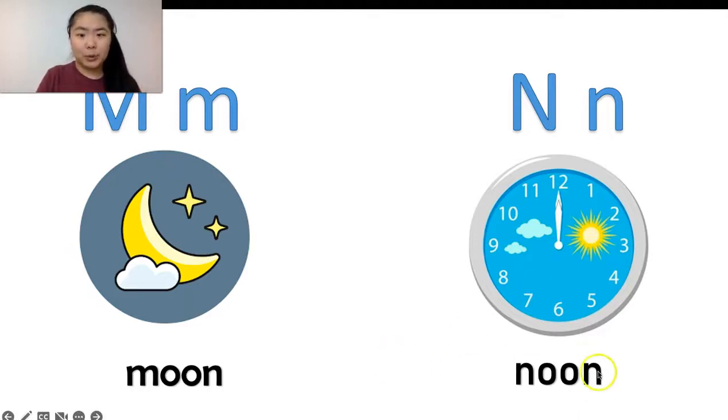Moon, noon. Moon, noon. Moon is a good word because it has M, OO, N. It has M and N, so you can practice both sounds.